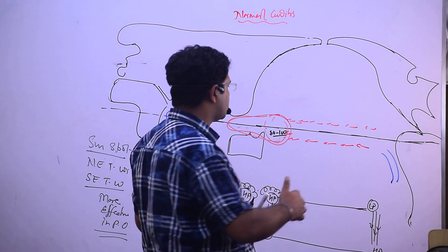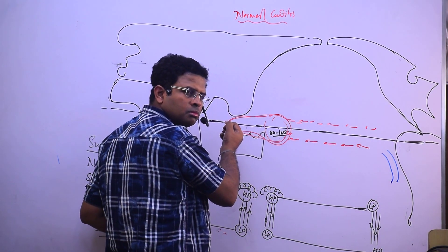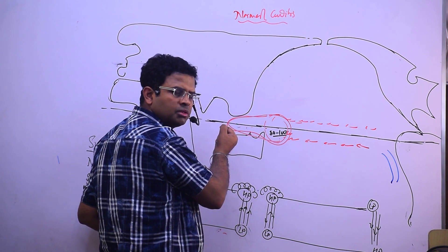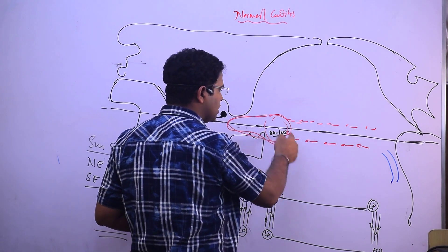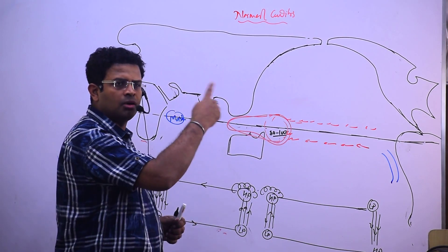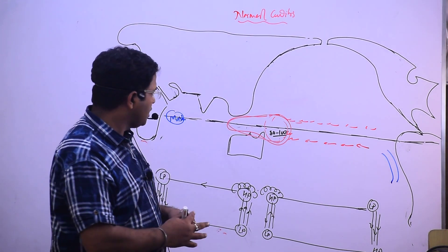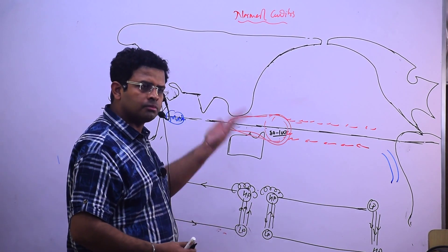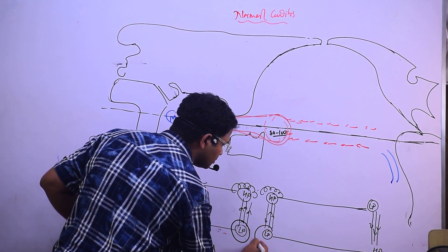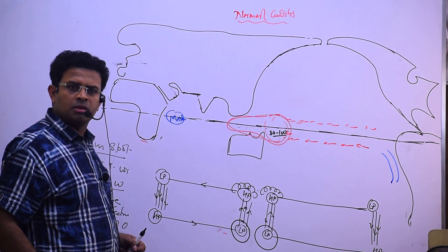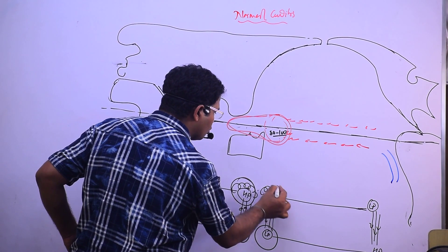With stronger North East and South East trade winds, the North equatorial current increases and the water level rises to 80 to 100 centimeters. This causes more warm water to evaporate, making the low pressure even lower and the high pressure even higher.